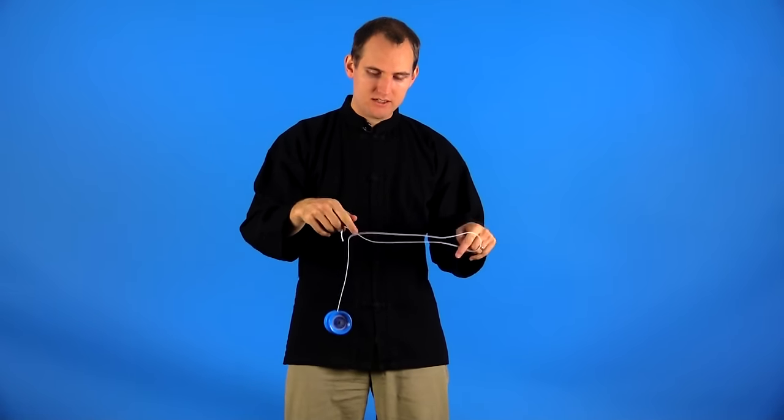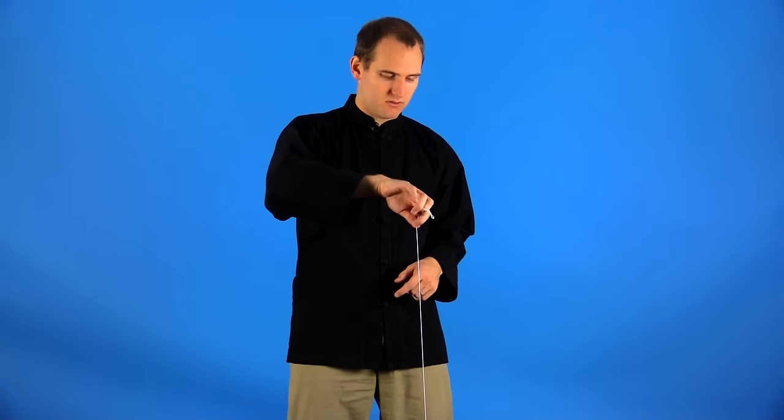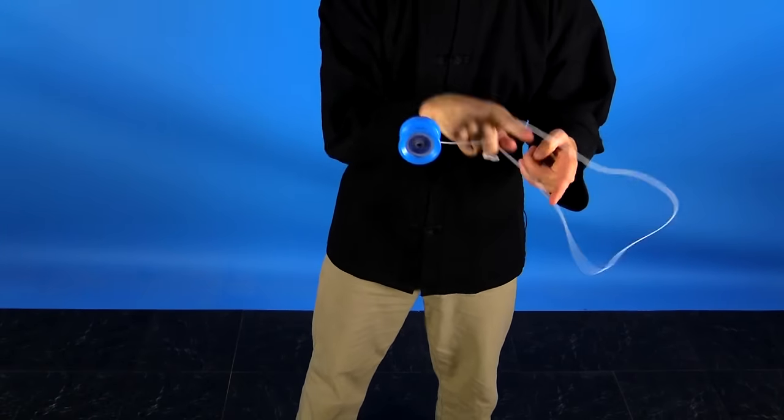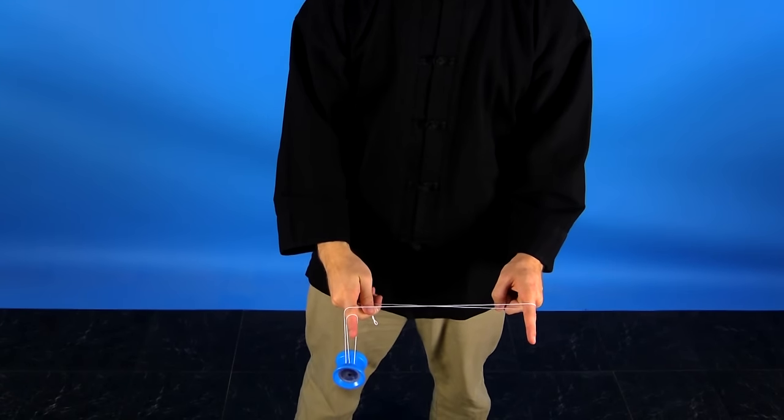And then, while the yoyo is still in the air from the whip, you're going to use your index finger on your throw hand to hook the string around and under the yoyo. That will let you end up into a one and a half mount.